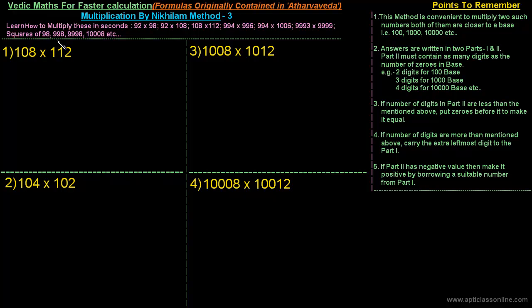For the first example, we see the multiplication of 108 × 112. The base is obviously 100 because both numbers are closer to 100, and both numbers are more than 100. The method is the same. First, we find out how much less the first number is than its base — that is, the difference between 100 and 108, which is minus 8. Similarly, the difference between 100 and 112 is minus 12.